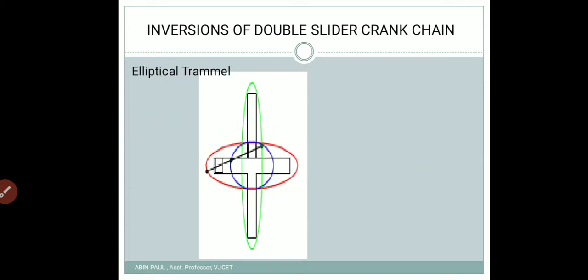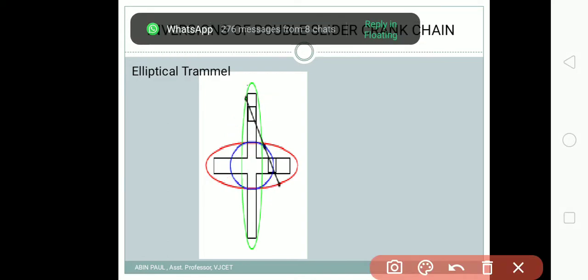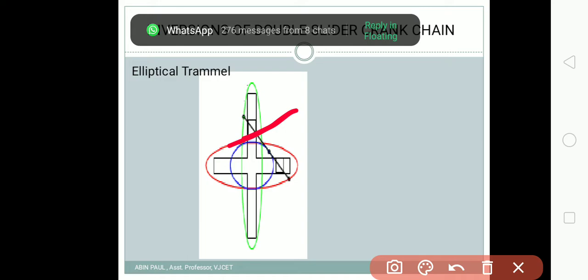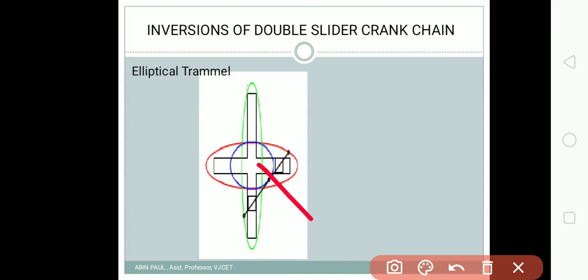The first inversion is the elliptical trammel. Here you can see there are two sliders — this is the first slider and this is the second slider — and these two sliders are connected with the help of a connecting rod. This slider constitutes one link, this slider constitutes the second link, and the connecting rod which connects the two sliders constitutes the third link. The slider is sliding along a fixed path.